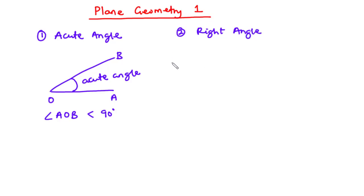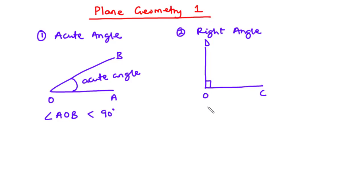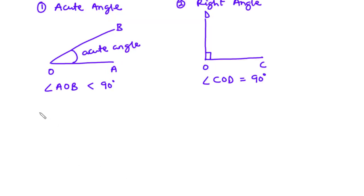A right angle is an angle whose measure or size is equal to 90 degrees. Assuming we have lines OC and OD, the angle COD is a right angle because its measure is equal to 90 degrees.